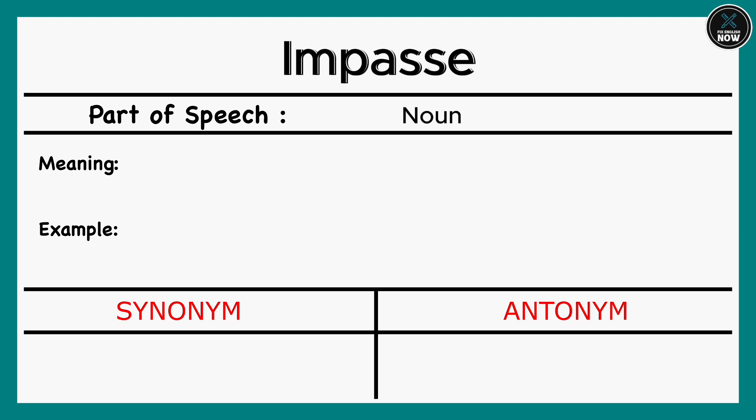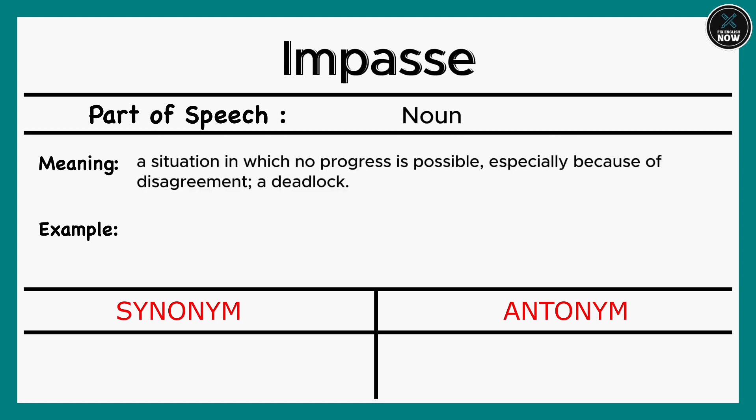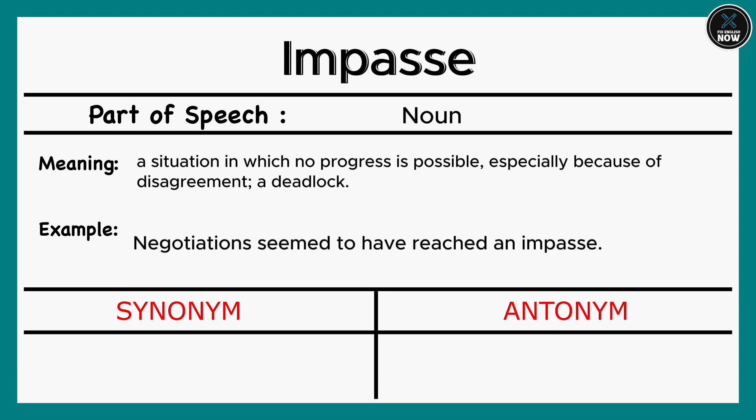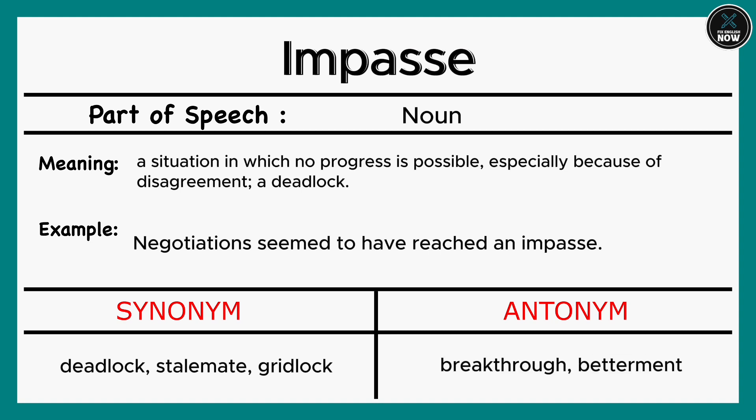Impasse: A situation in which no progress is possible, especially because of disagreement; a deadlock. Example: Negotiations seem to have reached an impasse. Synonyms: Deadlock, Stalemate, Gridlock. Antonyms: Breakthrough, Betterment.